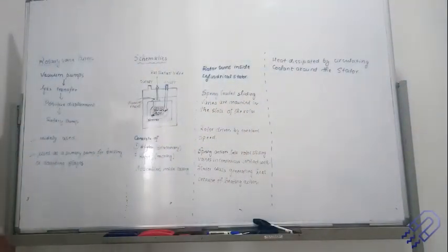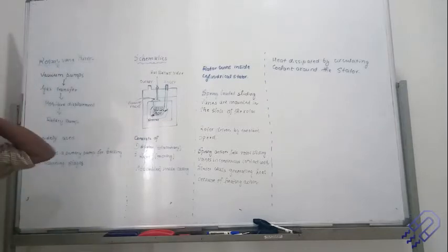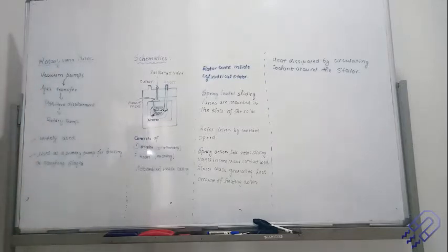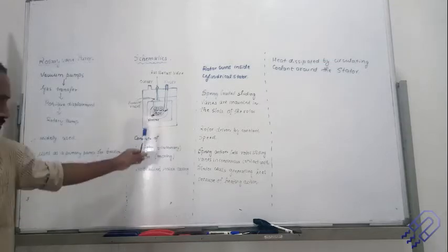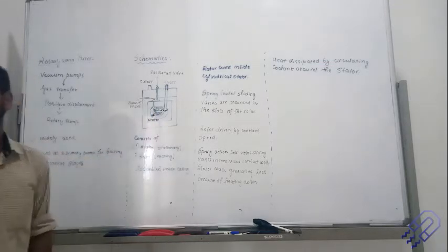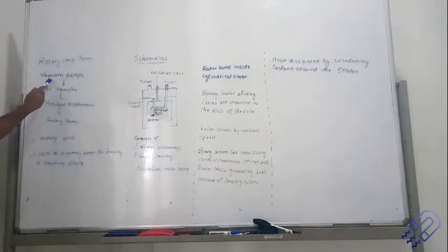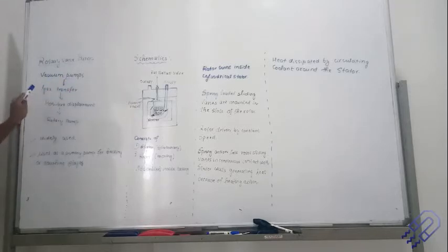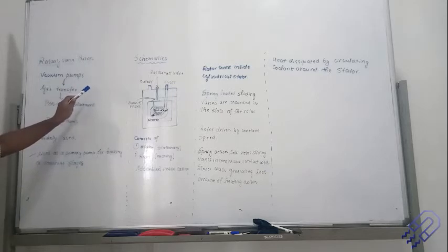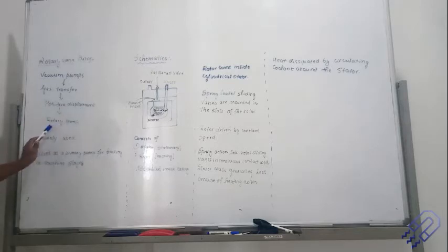We have a rotary valve pump. We are going to use a rotor stator system to drag out air. Looking at the table, we have vacuum pumps, and under this we have gas transfer and entrapment as the two types. For gas transfer, if it is positive displacement, we are basically having the rotary pump.